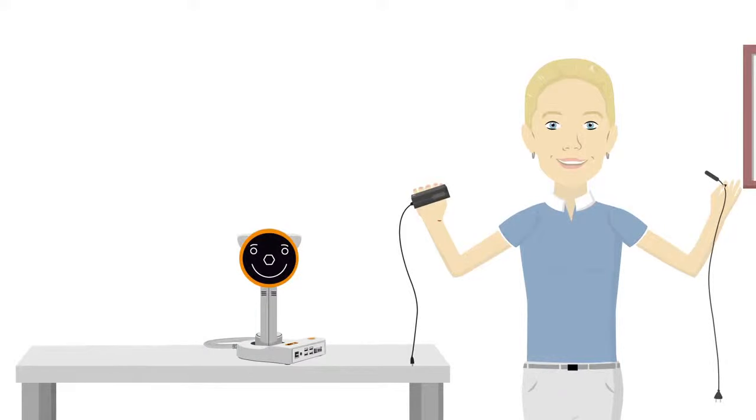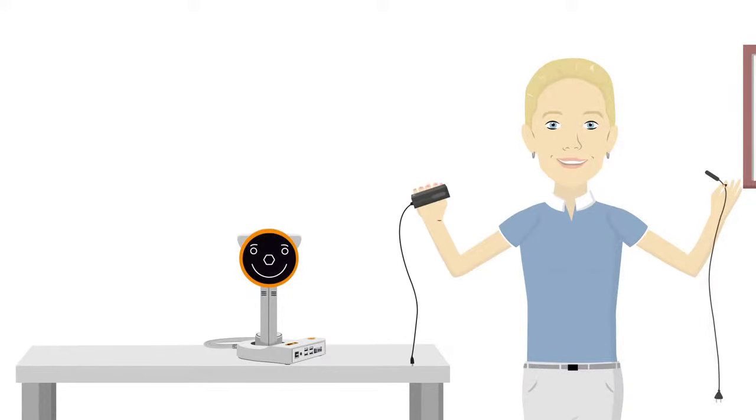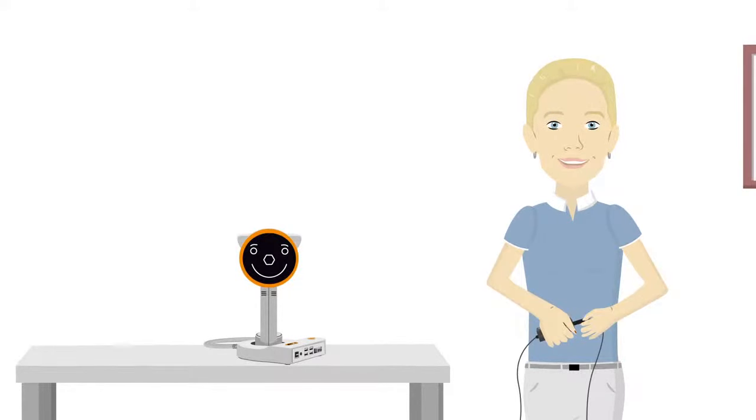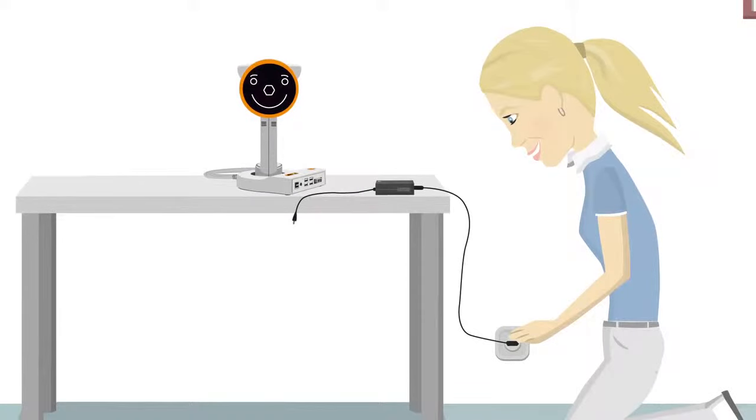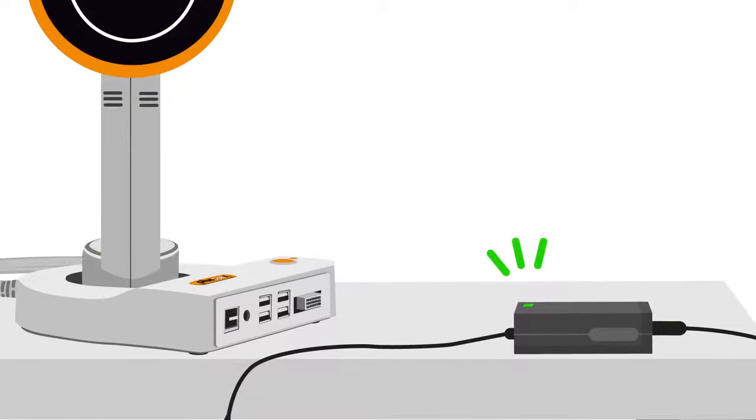It's time for Anna to connect the power supply. Find the power supply and the included power cord. Connect the power cord to the power supply and plug the power cord into an electrical outlet. Look for the green light. The light indicates that the power supply is working correctly.